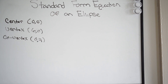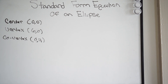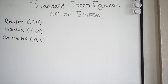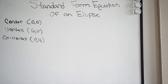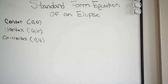Here we have another problem dealing with writing the equation of an ellipse in standard form. We're given the following information: the center, the vertex or vertices which occur on the major axis. We're talking about an ellipse, so we have a major and a minor axis. Our vertices will always happen on our major axis, and our co-vertices happen on the minor axis.